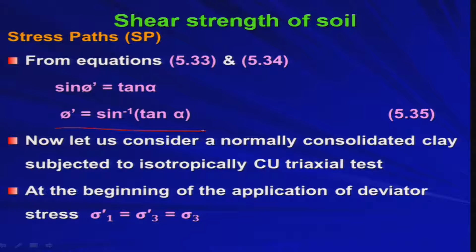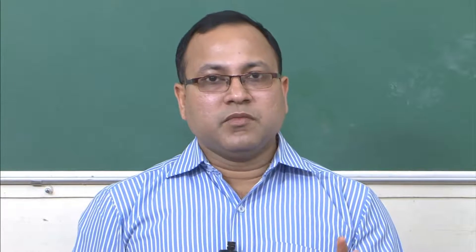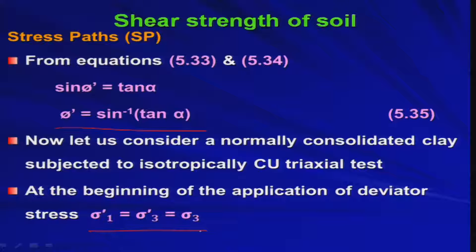At the beginning, before applying the deviator stress, sigma_1' equals sigma_3' equals sigma_3, because we are considering a consolidated test. Consolidation happens in stage 1 due to the cell pressure sigma_3, and drainage is allowed — otherwise consolidation will not happen. Therefore, the effective major principal stress sigma_1' equals the effective minor principal stress sigma_3' equals the total stress sigma_3, because we are considering complete consolidation.